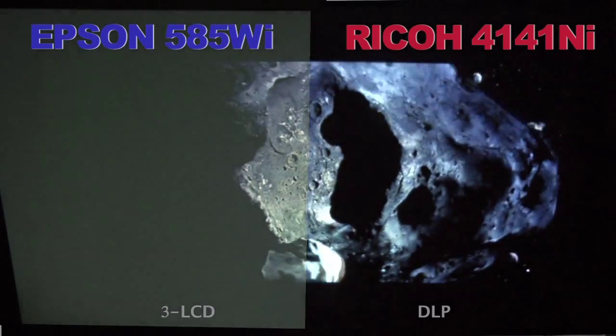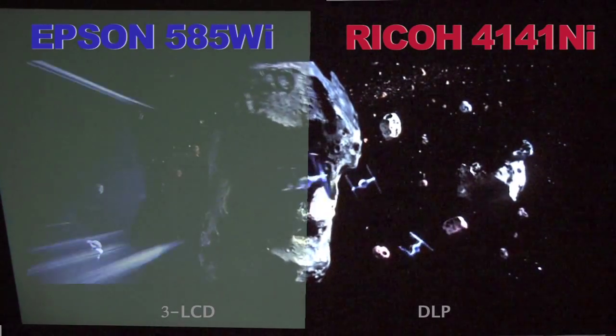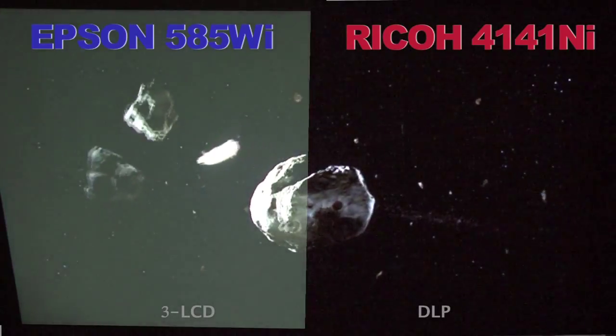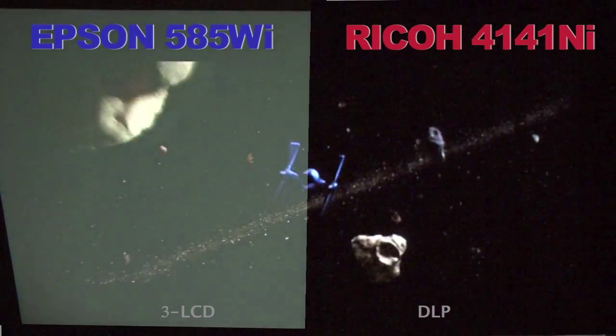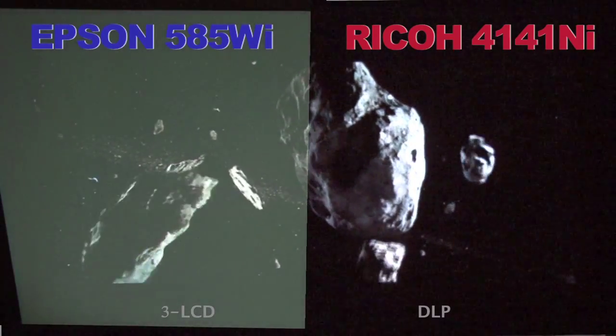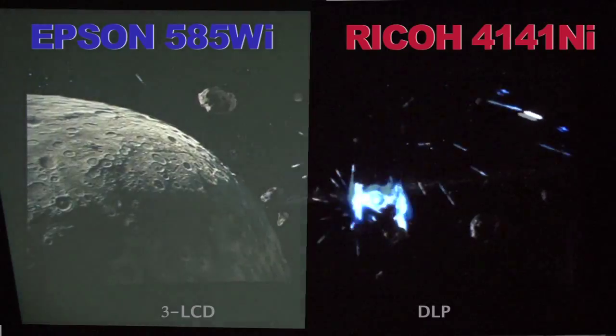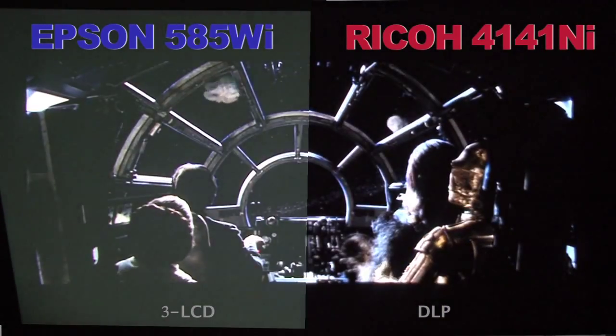However, to the naked eye in our side-by-side testing, the Ricoh still appeared to have better contrast due to the DLP system and its inherent ability to produce a real black as opposed to the dark grey produced by Epson's 3LCD technology. Check out our video titled 3LCD vs DLP for more information on these two technologies.